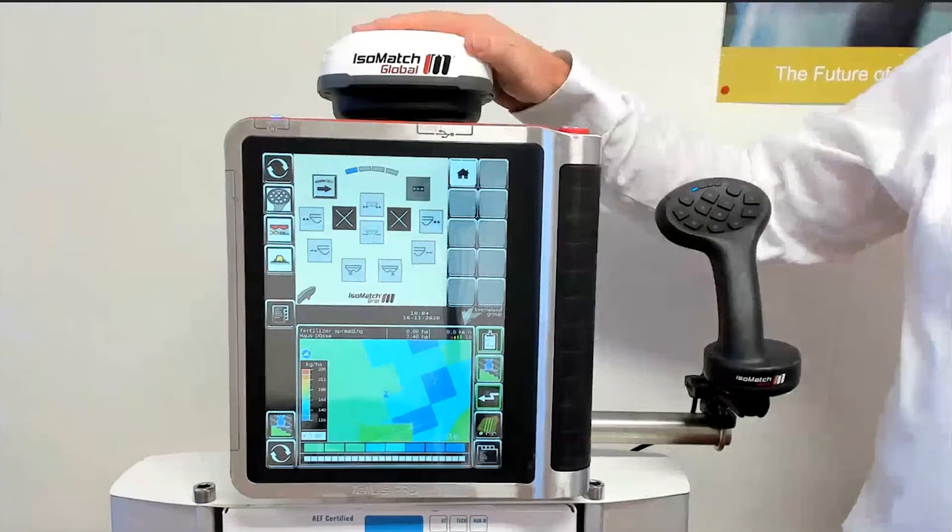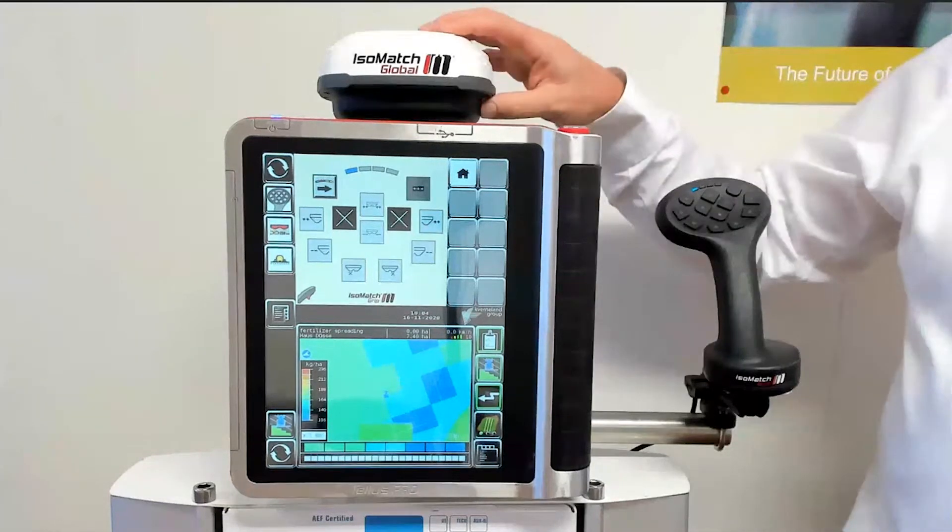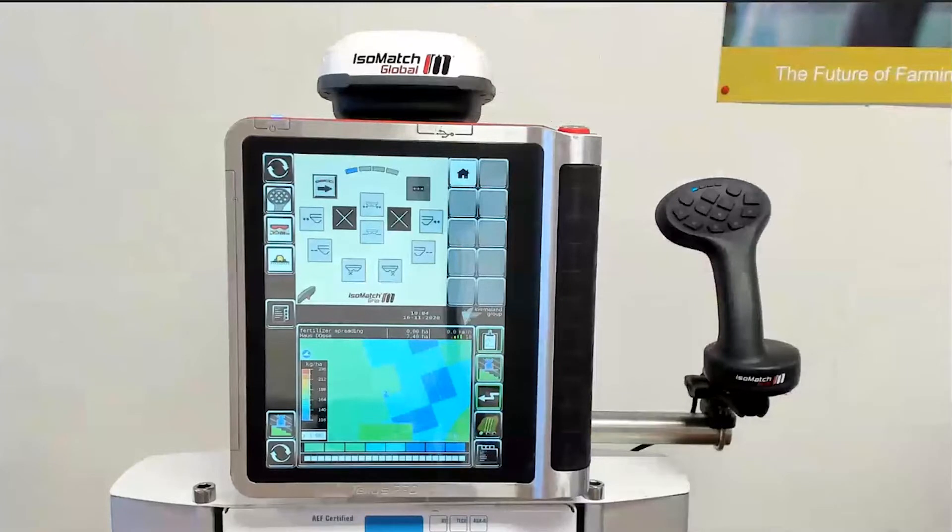The reason for the change is the previous version has been phased out by the supplier. The new IsoMatch Global 2 has new hardware inside and supports more GNSS systems, which stands for Global Navigation Satellite System. The accuracy is DGPS, so 30-50 cm pass-to-pass accurate.